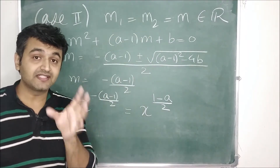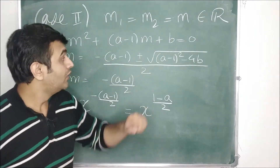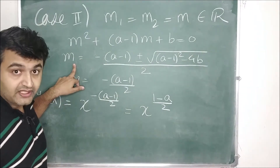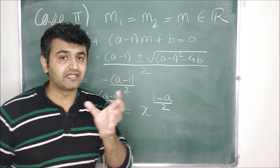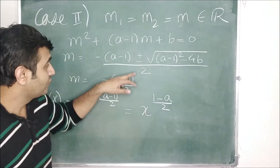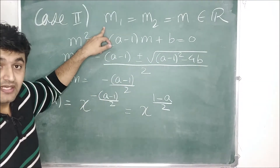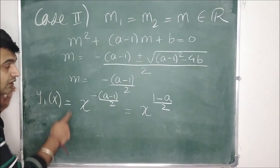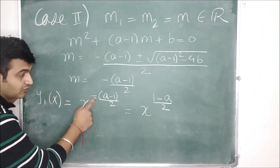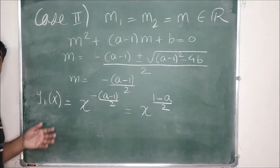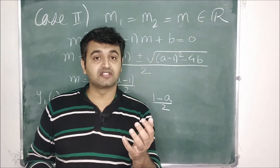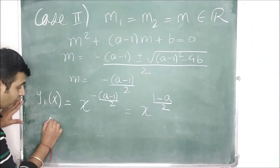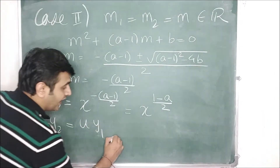Now suppose m₁ = m₂, that is the roots are real and repeated — the discriminant of the auxiliary equation is zero. Let the repeated root be m, so one solution is y₁ = x^m. To find a second linearly independent solution we apply reduction of order, since we have one solution of a second order ODE.